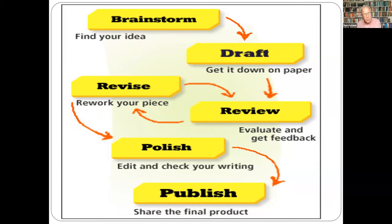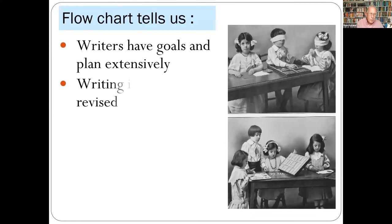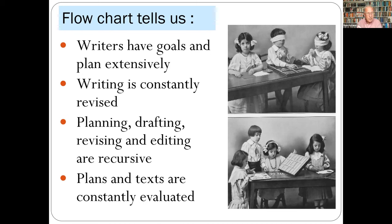In this model there's a memory, central processing unit, problem-solving programs, and flowcharts. The flowchart shows that writers don't create texts by thinking, writing, editing in sequence — they jump between different stages. It tells us that writers have goals and plan extensively through internet searches and note-taking; that writing is constantly revised, often in our heads before any text has been produced; and that planning, drafting, revising, and editing are recursive — they happen again and again, potentially simultaneously, in a feedback loop.